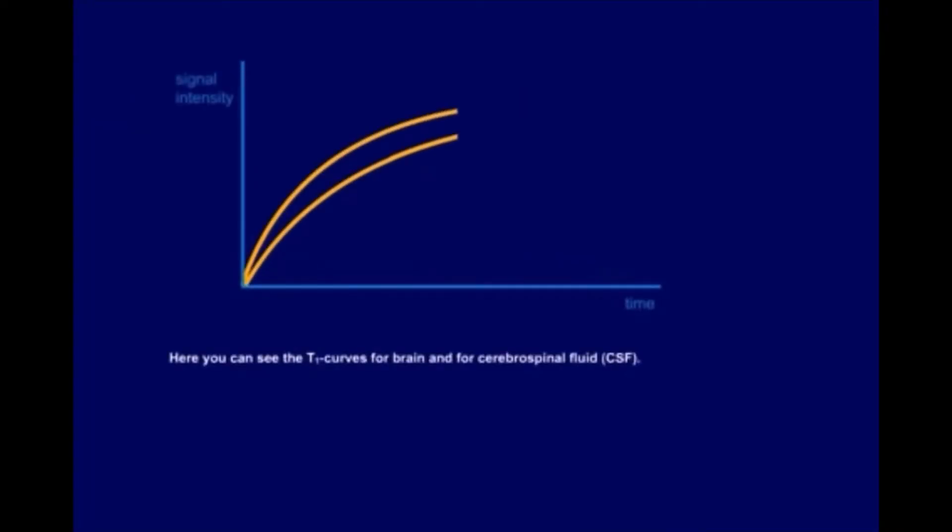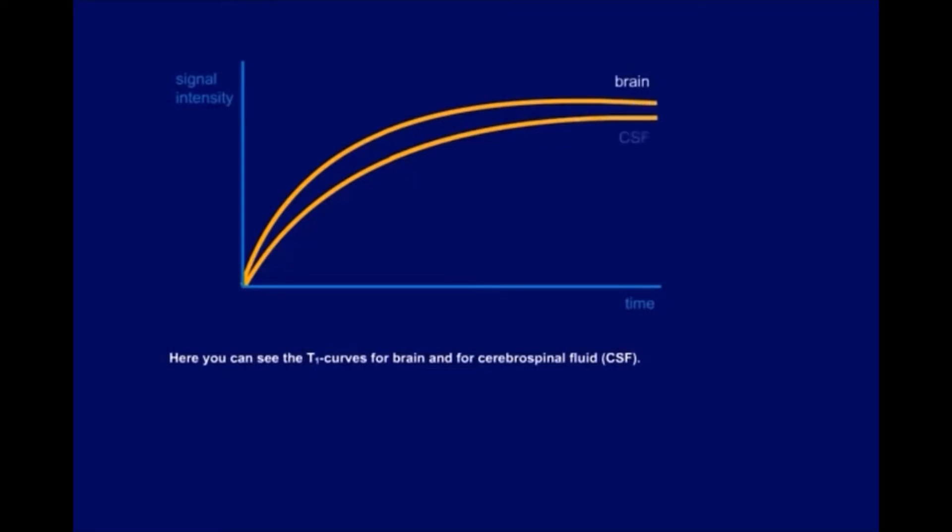Here you can see the T1 curves for brain and for cerebrospinal fluid CSF. Brain has a shorter longitudinal relaxation time than CSF. At time 0, we have no longitudinal magnetization at all, and this can be the time immediately after our first 90 degree pulse.